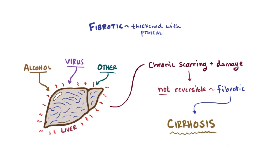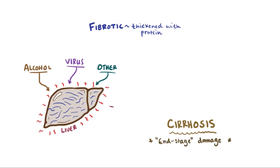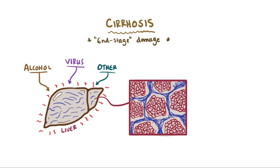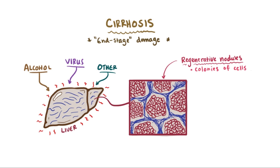Because it's usually irreversible, cirrhosis is often referred to as end-stage or late-stage liver damage. When liver cells are injured, they start to come together and form what are called regenerative nodules. You can think of these as colonies of living liver cells, and these are one of the classic signs of cirrhosis — which is why a cirrhotic liver is more bumpy as opposed to a smooth, healthy liver.